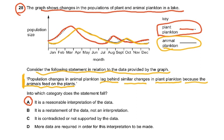Into which category does this statement fall? It is a reasonable interpretation of the data. It is not merely a restatement of data. It is not contradicted by data — it is supported by the data. More data is not required; it's about a whole year's data from January to December, which is quite enough to make interpretations.